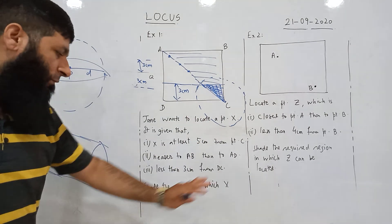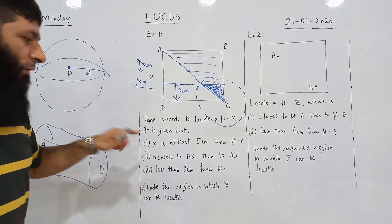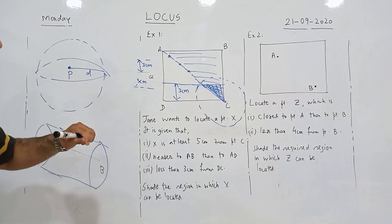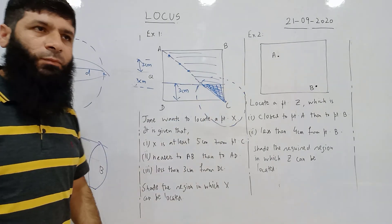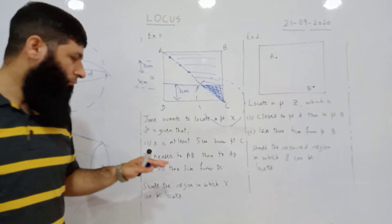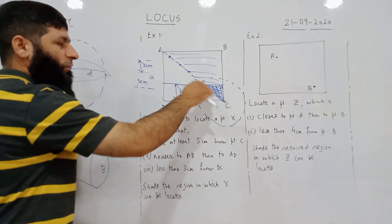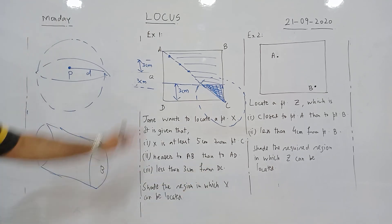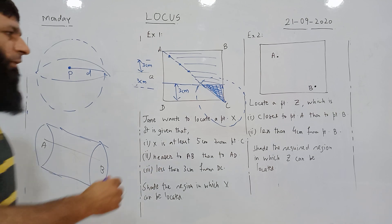Now combining all conditions, we shade the region in which X can be located. We can verify: the first condition is that the point is at most five centimeters from point C, so it lies within the circle. The second condition is that the region is nearer to AB than to AD. The third condition is that the point is less than three centimeters from line DC. Point X will be in this combined shaded region.